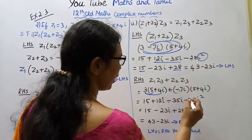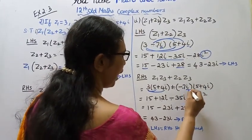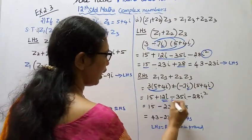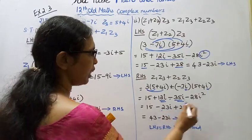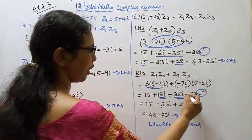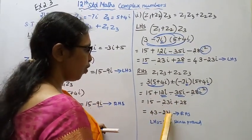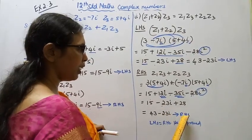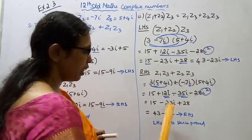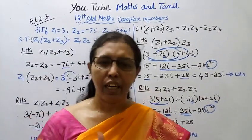Plus into minus gives minus, 7 fours are 28, i into i is i squared equals minus 1. So 15 plus 28 equals 43. Combining imaginary parts: 12i minus 35i equals minus 23i. So left hand side equals 43 minus 23i. Right hand side also equals 43 minus 23i. Left hand side equal to right hand side, hence proved.